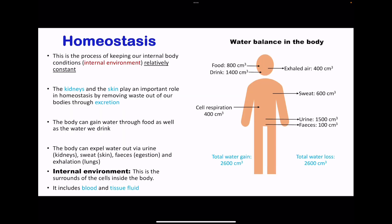Homeostasis is a process of keeping our internal body conditions relatively constant. That means there are going to be some fluctuations, but some hormones are going to work at returning the conditions towards that constant value, meaning there are not going to be bigger fluctuations — only little fluctuations about a specific value.